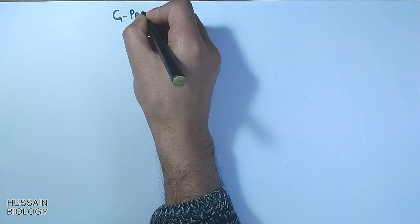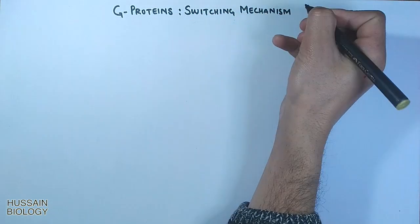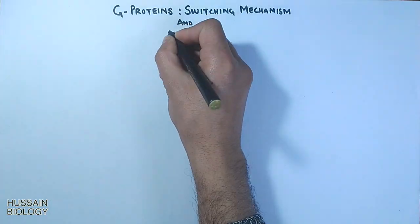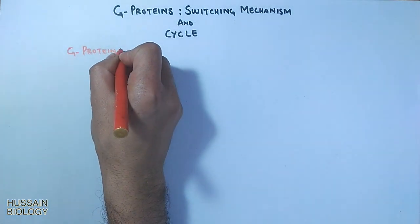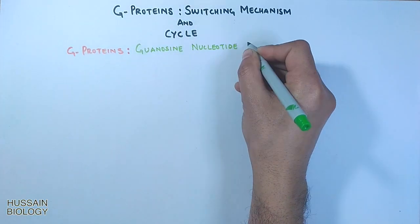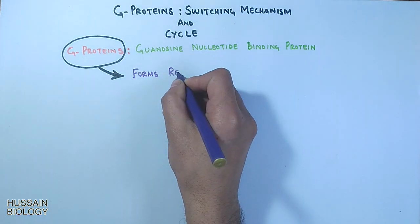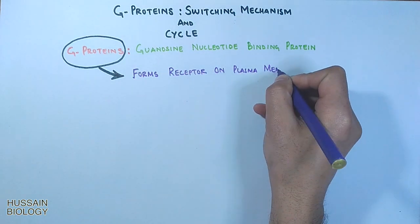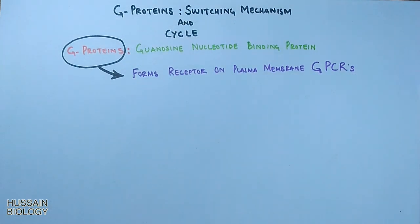In this video we will be discussing about the G-proteins, their switching mechanism and its cycle into active and inactive forms. The G-proteins are the guanosine nucleotide binding proteins and these proteins form the receptor on plasma membrane in the form of GPCRs, which can mediate the various signaling pathways.